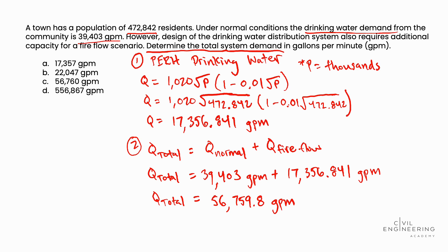Looking at our answer choices, we see that is answer choice C, and we've successfully solved this problem. I hope that helped you. If you're looking for more practice as you prepare for the Civil PE Water Resources Exam, head on over to civilengineeringacademy.com. We have review courses for all disciplines of the PE Civil Exam: water resources, transportation, geotech, construction, et cetera. We also have FE review courses as well as floodplain management review courses — great resources. We'd love to see you over at civilengineeringacademy.com, and we'll see you soon.